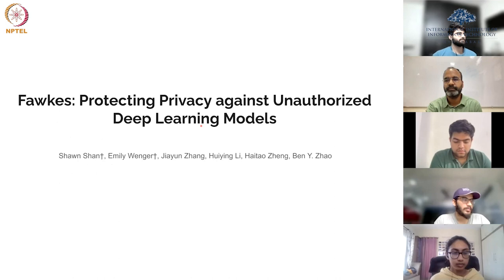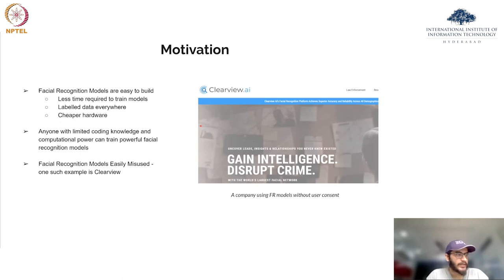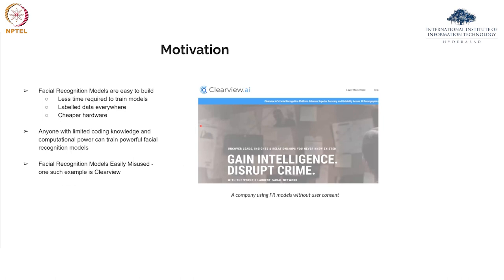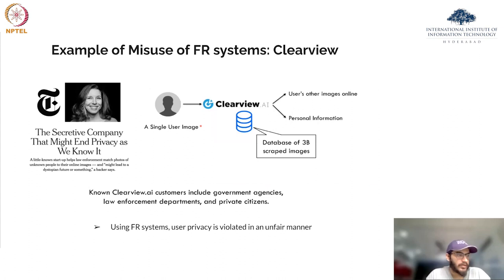Good evening everyone. I'll be presenting FAWKES — protecting privacy against unauthorized deep learning models. Due to developments in deep learning, facial recognition systems are successfully scanning millions of citizens in different countries without explicit consent. Facial recognition systems are easy to build, models are only getting faster to train, and hardware is getting cheaper. One example is Clearview.ai, which has up to 3 billion images in their database, scraped from social networks without user consent, violating user privacy — this data can be used for malicious purposes such as extortion and stalking. Securing our data against such usage is of paramount importance.